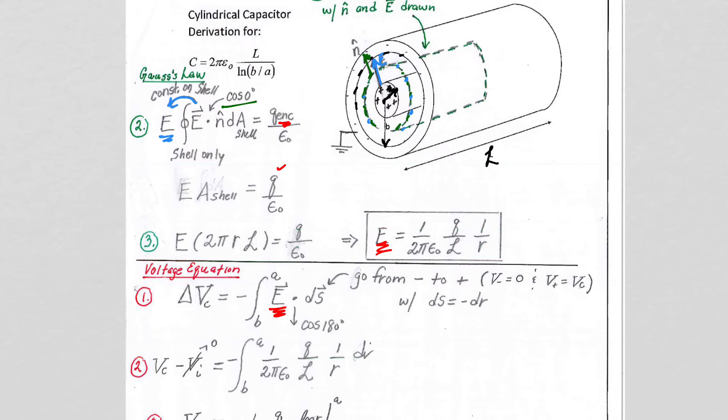We're going to do the same thing with our integration. Our limits, our final is at a, our initial is b, so we're integrating backwards against the electric field.